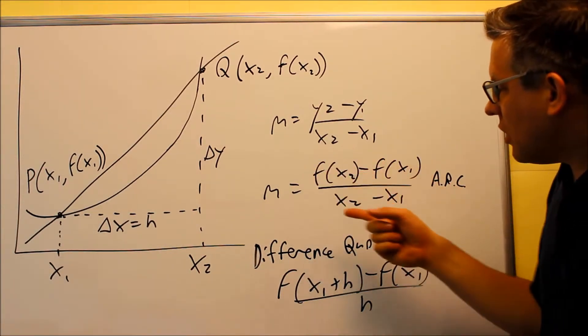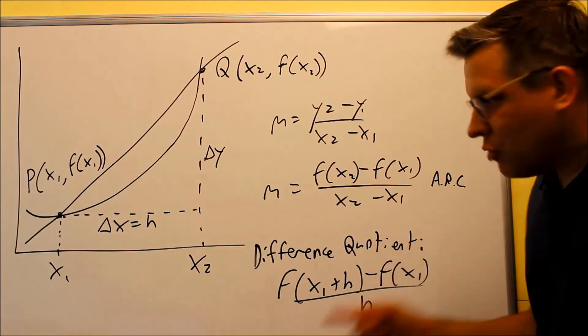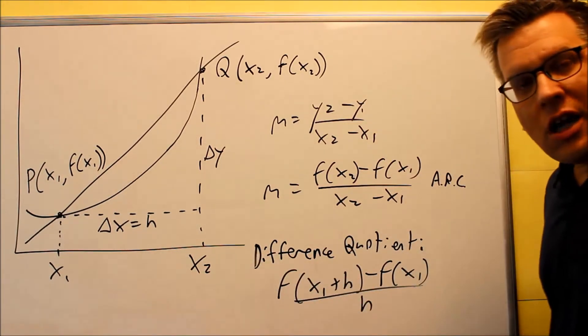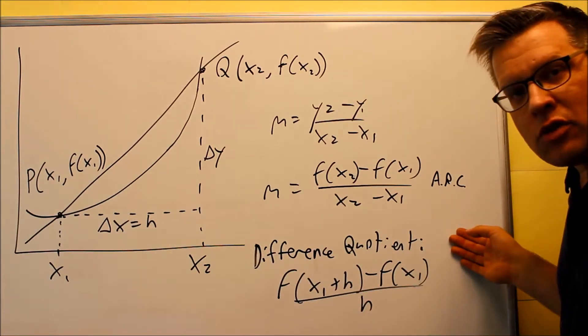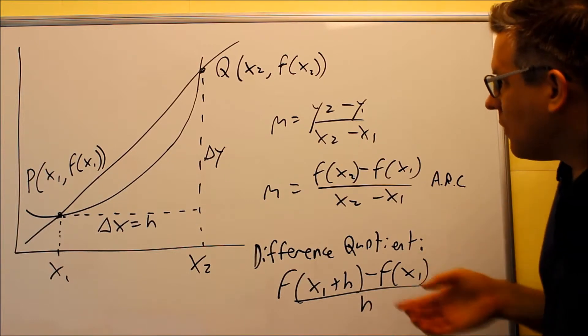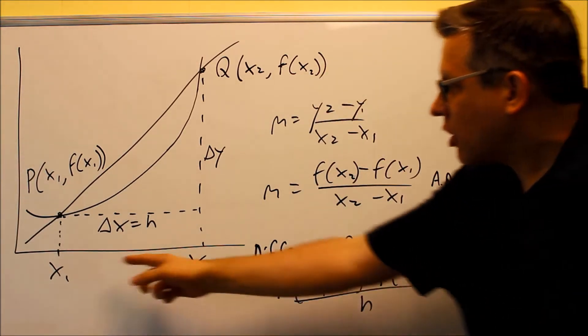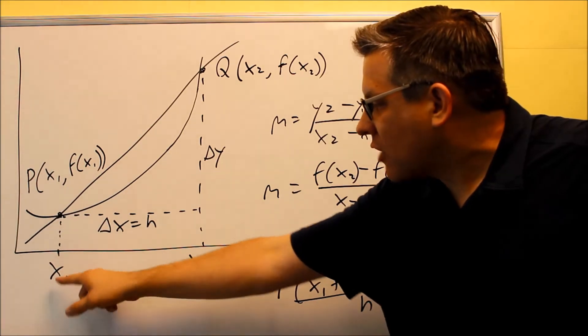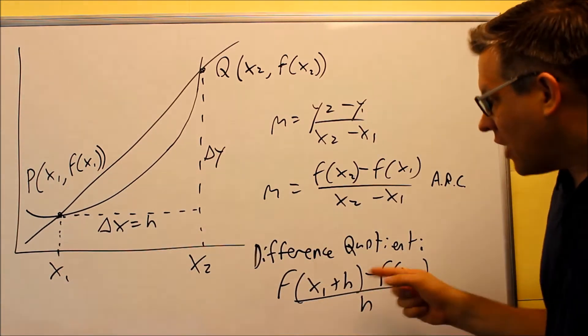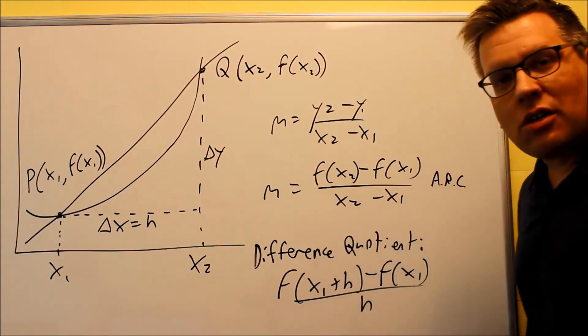Average rate of change would be the average slope between two particular x values. And of course down here we have our difference quotient formula. So instead of using x2, instead we're going to write it in terms of x1 plus your h. That ends up being your secondary x value.